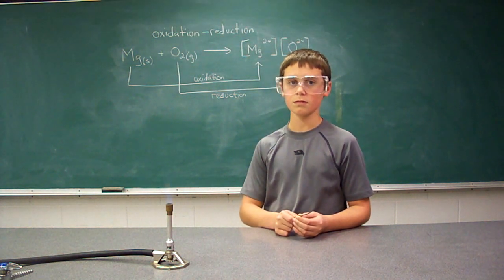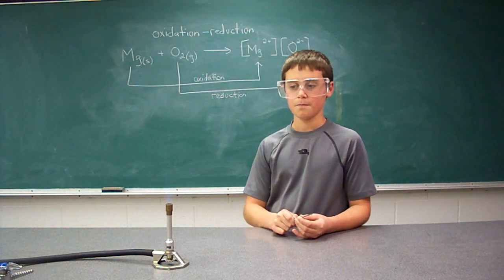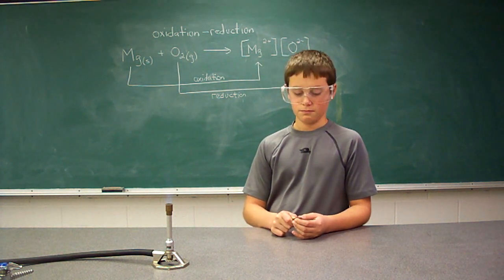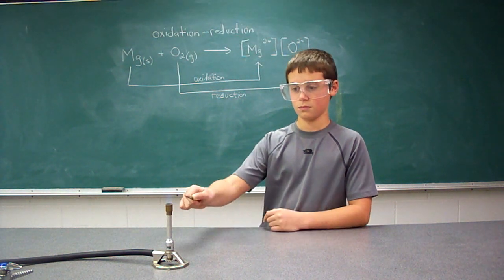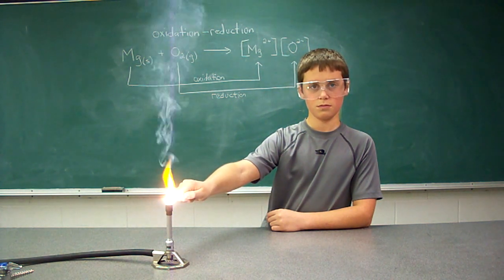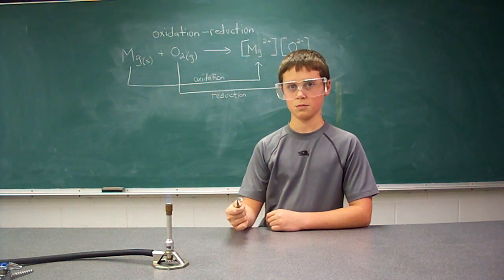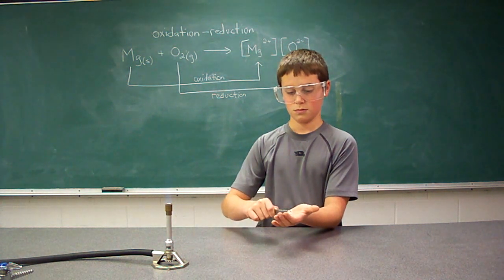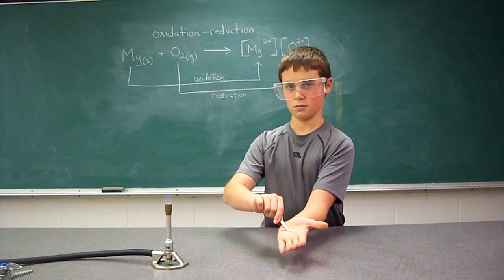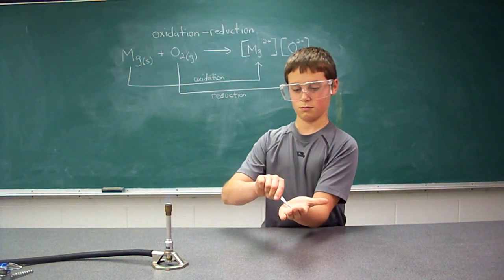To demonstrate this, Zachary is going to use magnesium metal, which is a very soft, relatively reactive metal. We're going to burn it in our burner and it's going to react with the oxygen in the air to produce what's called magnesium oxide after the transfer of electrons occurs. You can see the product left is a white powdery substance called magnesium oxide, formed after the oxidation-reduction reaction took place.